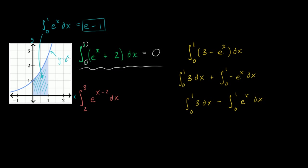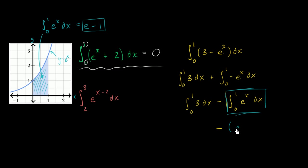Lucky for us, we already know what the integral from zero to one of e to the x dx is — that's going to be equal to e minus one. So if you subtract an e minus one, let me just write it out so we don't get confused: we're going to subtract an e minus one.